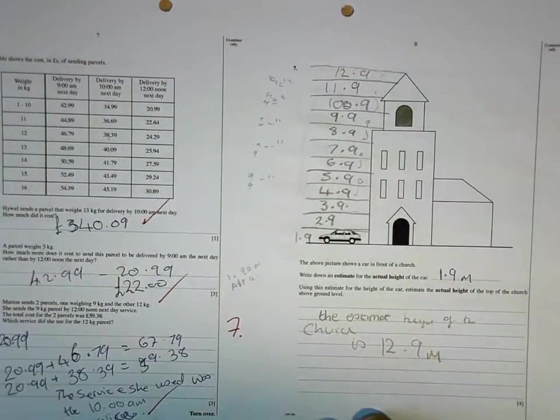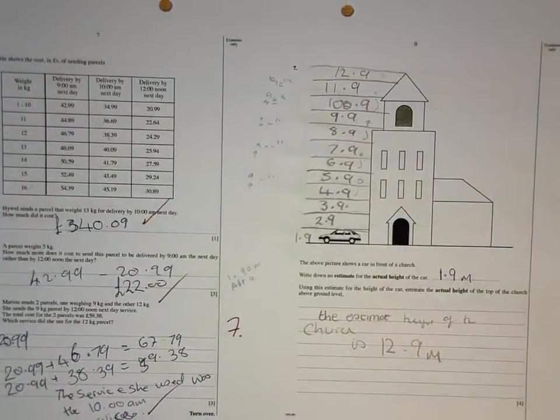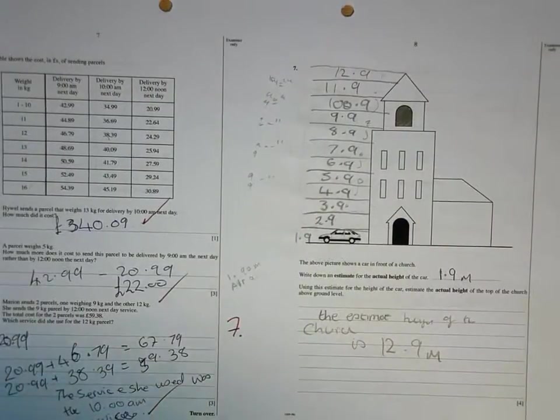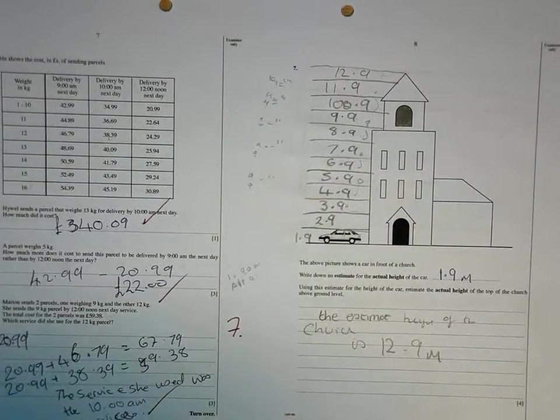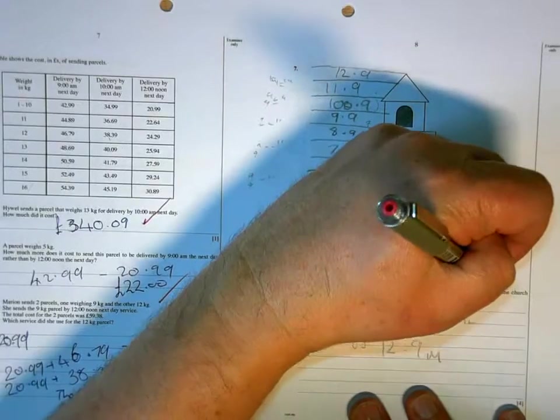1.9 metres, well, that's a bit of a difficult number to work with. With estimates, what you're trying to do is choose a number that's easy, so 1, 1.5, 2. So 1.9 is not a sensible estimate.